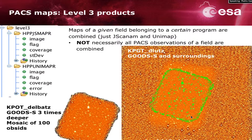What are the Level 3 products? If we have several Level 2.5 maps belonging to the same field within a certain program, they are combined using the mosaic task — simply averaging the maps — to create Level 3 maps. This operation is performed only with the JSCANAM and Unimap maps. Importantly, not necessarily all PACS observations of a field are combined in a Level 3 product; the condition is that the datasets must belong to the same observing program.